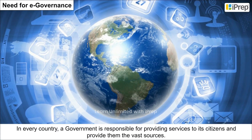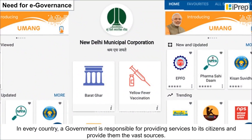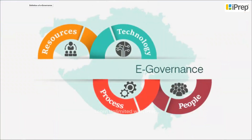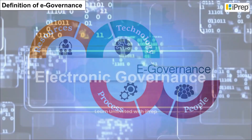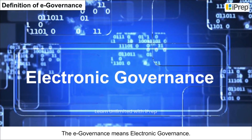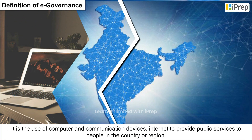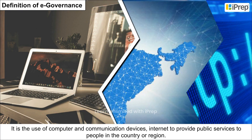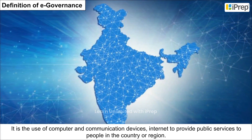In every country, a government is responsible for providing services to its citizens and providing them vast resources. Definition of e-governance: e-governance means electronic governance. It is the use of computers, communication devices, and the internet to provide public services to people in the country or region.